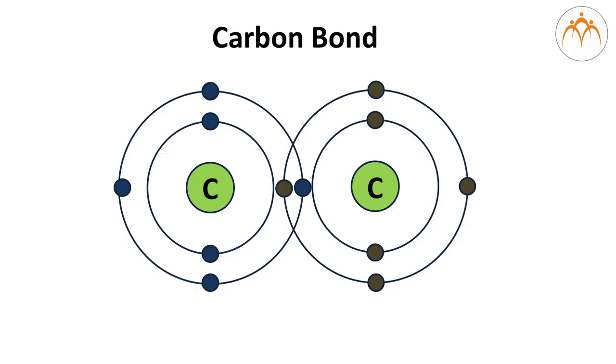For example, a carbon-carbon bond often forms where carbon donates one of its electrons and the other carbon donates other electrons, really sharing an electron pair in order to form this bond.